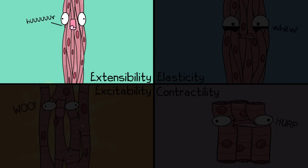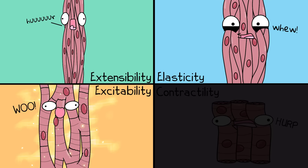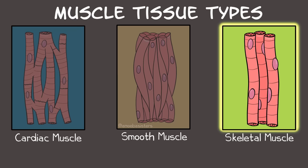All muscle tissue have some characteristics to mention. It can stretch or extend — extensibility. It can retract back to its starting length — elasticity. Muscle tissue also has excitability, meaning these cells have the ability to be stimulated, and in the case of muscle tissue, their membranes can have electrical changes and send action potentials. Muscle tissue also has the ability to contract, or contractility. There are some differences in how the contraction happens in the three tissue types.